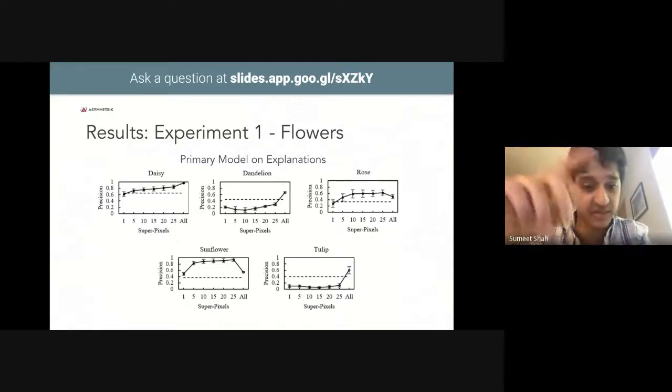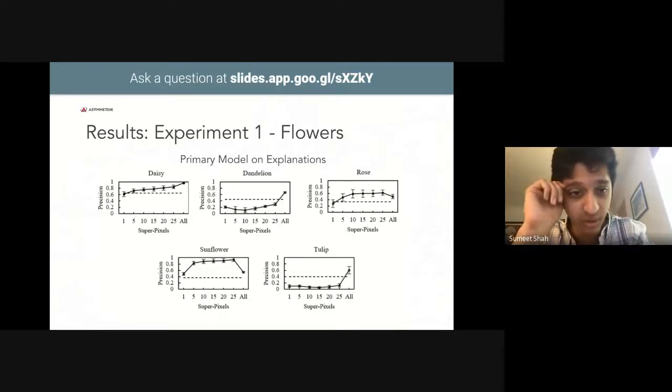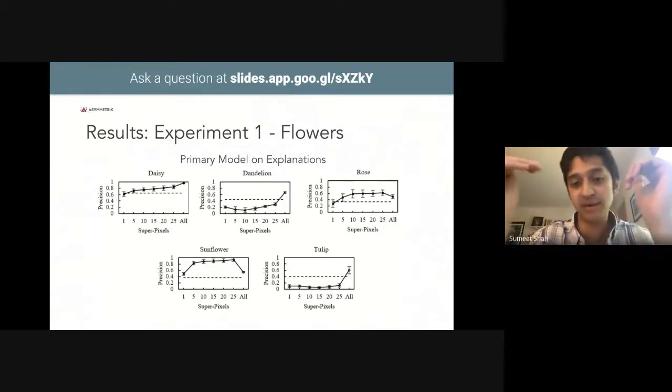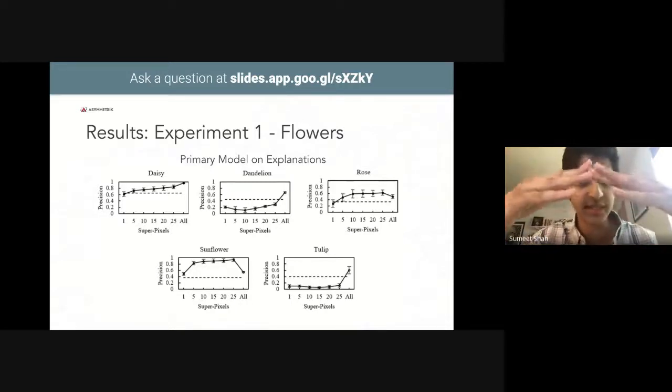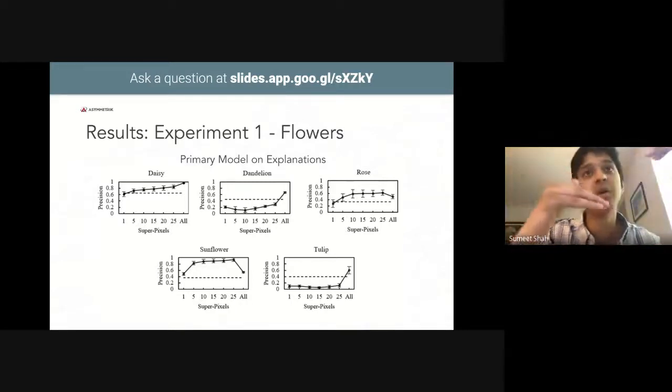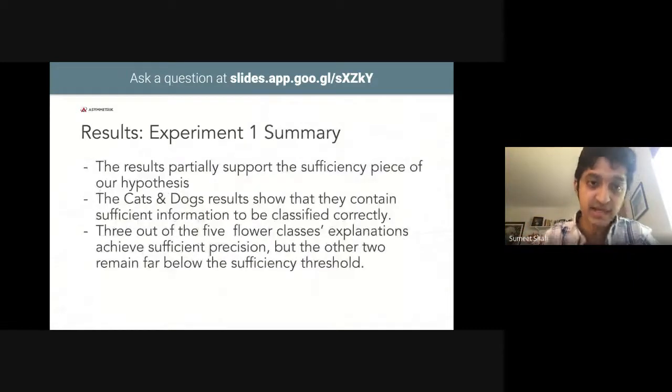Rose and sunflower explanations follow similar trends to each other. Precision on low superpixels is relatively poor, but increases significantly as we increase the count. Interestingly, both classes have explanations with 25 superpixels classified with greater precision than the original images themselves. This is actually a very positive reflection on the performance of the explanation generation framework. Having a greater precision in the explanations suggests that the explanation framework is filtering out noise in the original images.